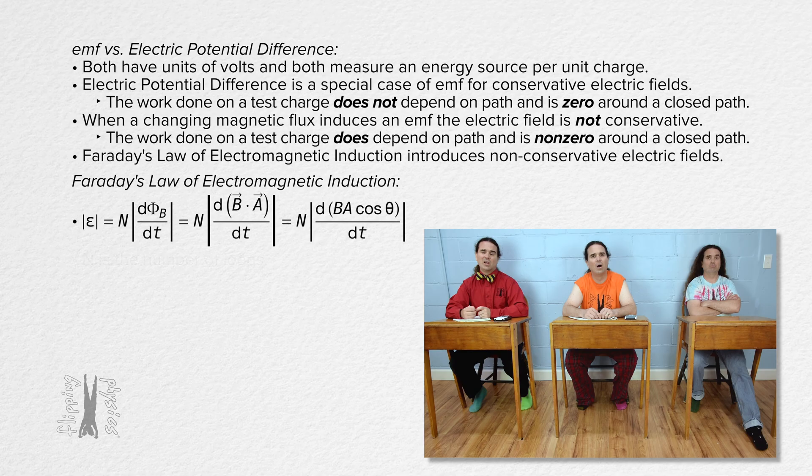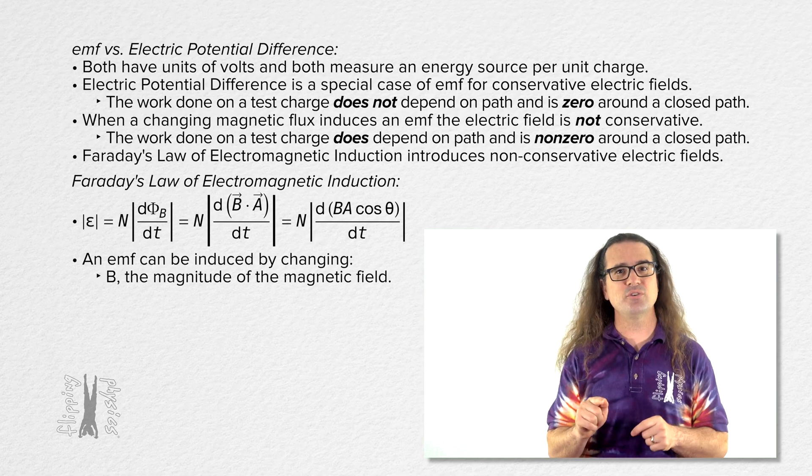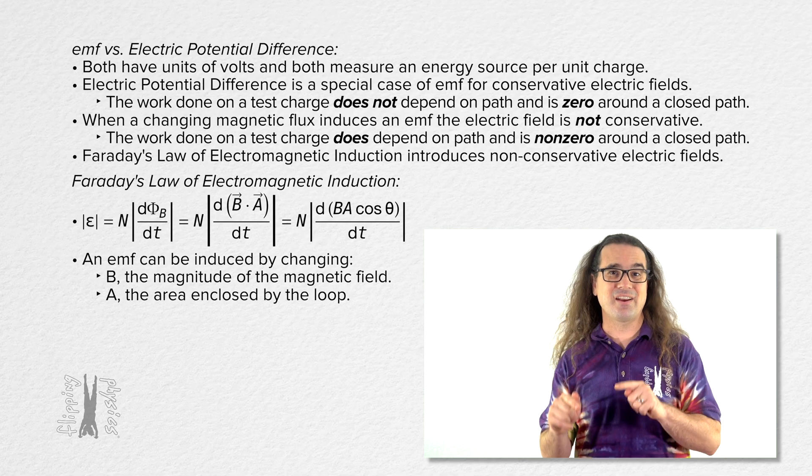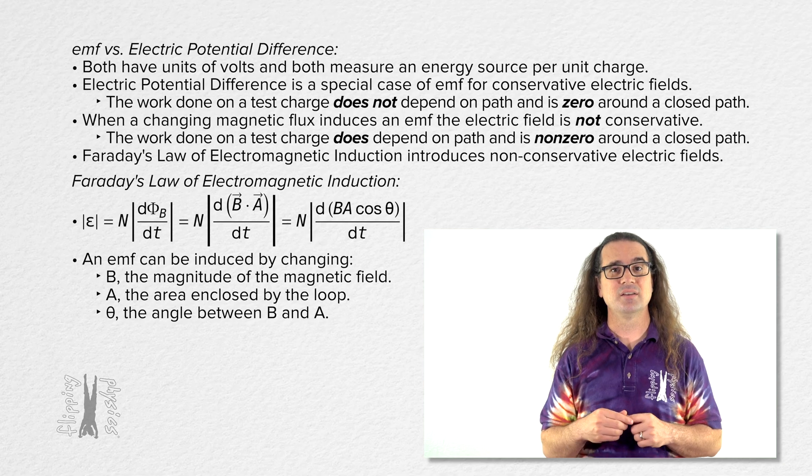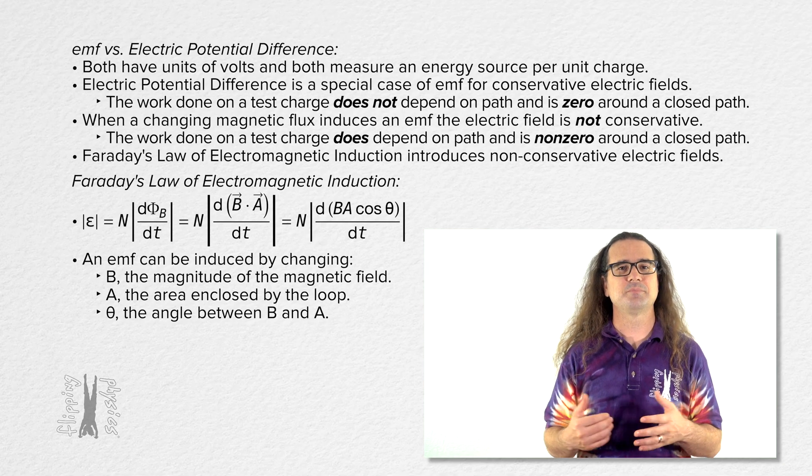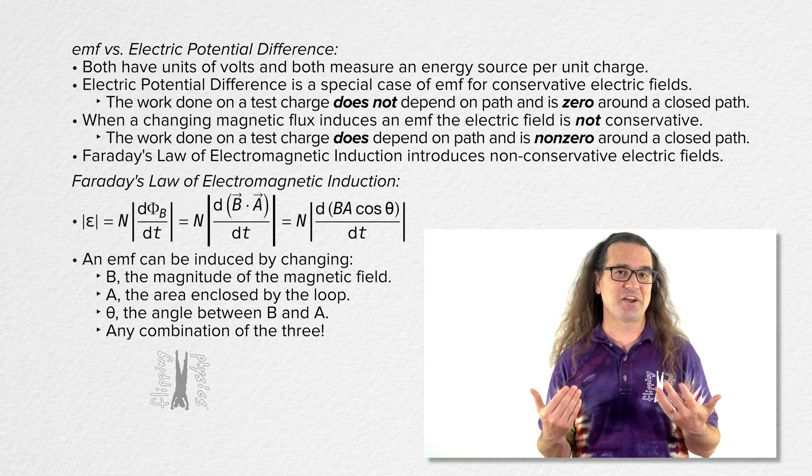Therefore, notice an EMF can be induced by changing the magnitude of the magnetic field, the area enclosed by the loop, the angle between the magnetic field and the loop area which is theta in the equation, or my personal favorite, any combination of the three.